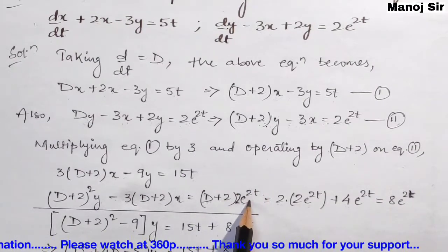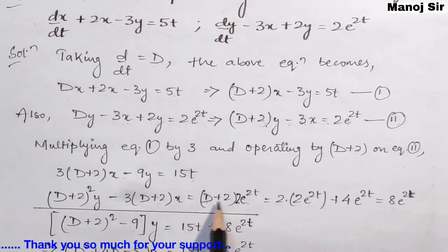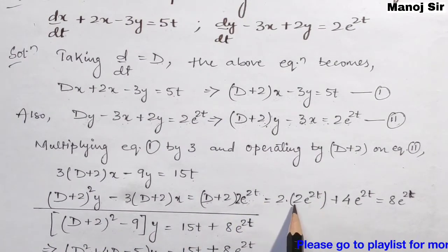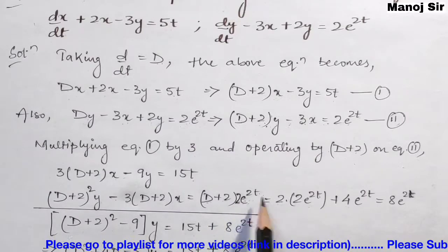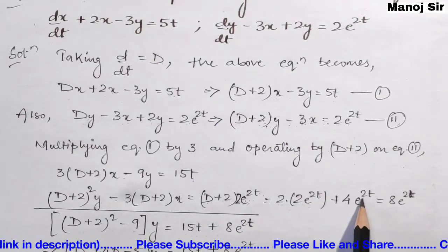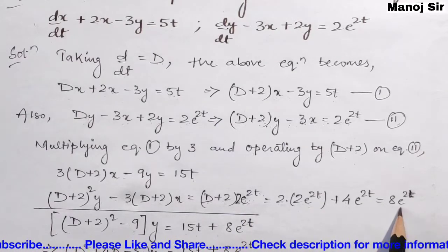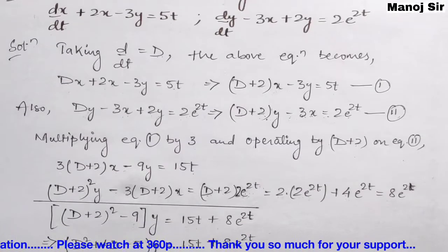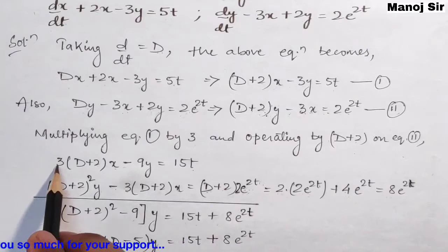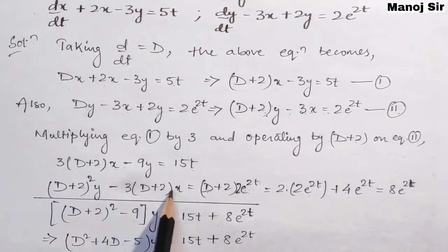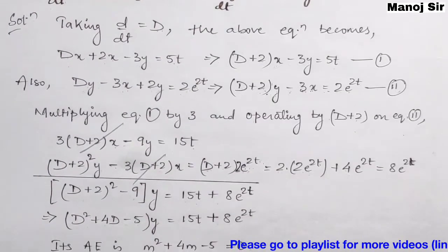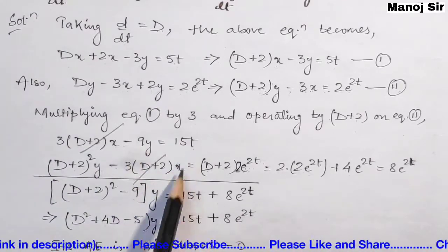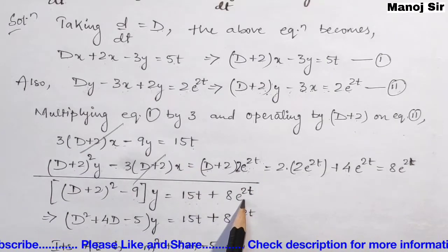Solving (D+2)[2e^(2t)]: differentiating gives 2·2e^(2t) = 4e^(2t), plus 2·2e^(2t) = 4e^(2t), giving 8e^(2t). The x terms cancel (3(D+2)x and −3(D+2)x), so combining gives [(D+2)² − 9]y = 15t + 8e^(2t).